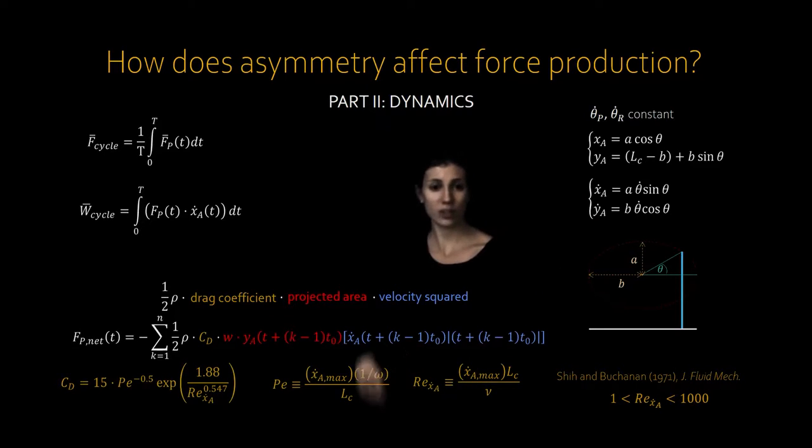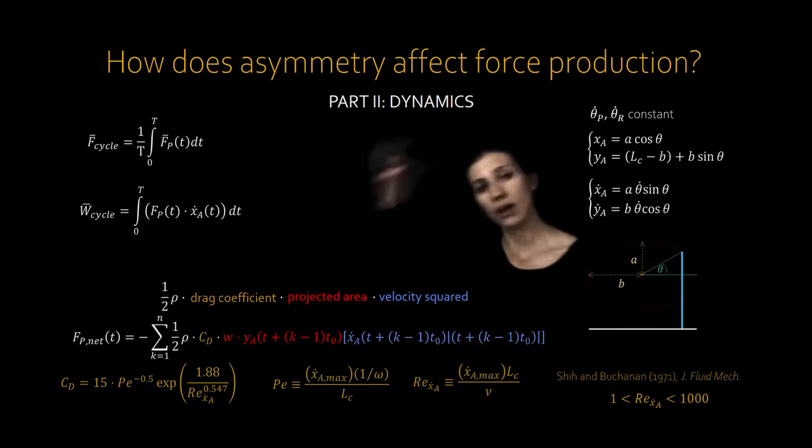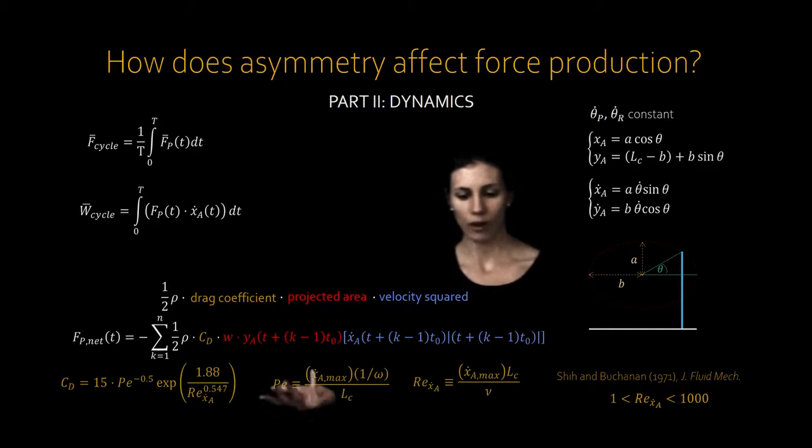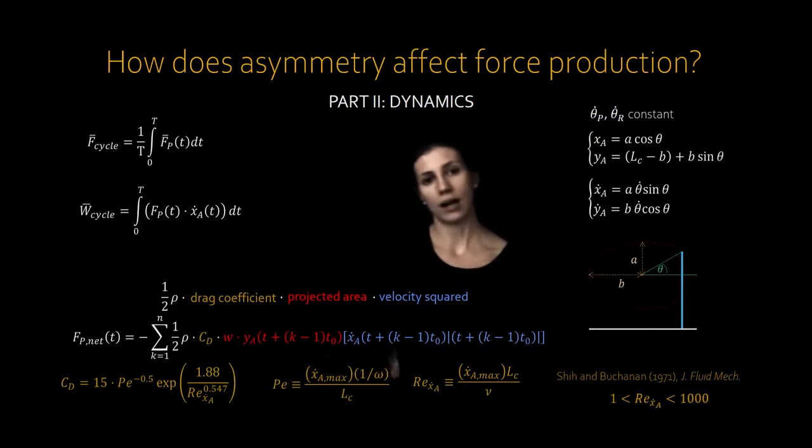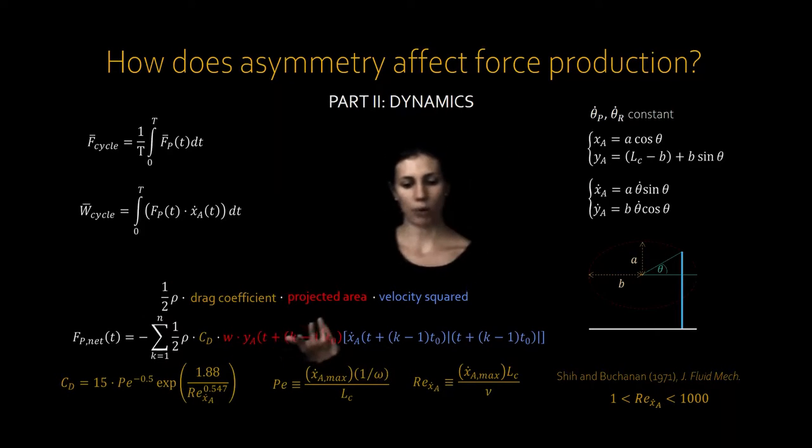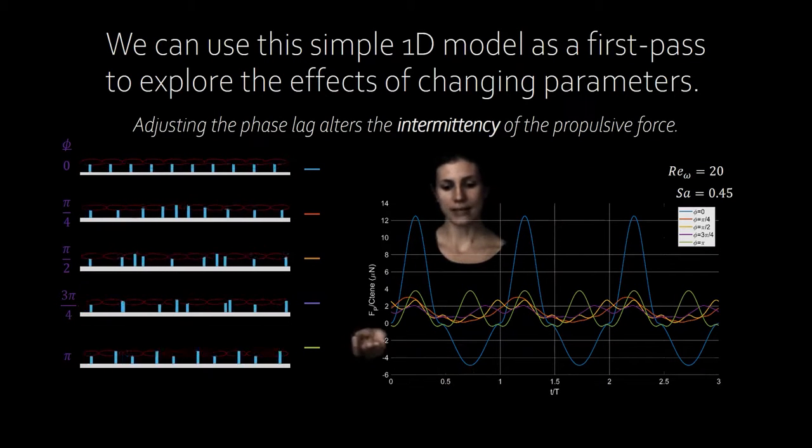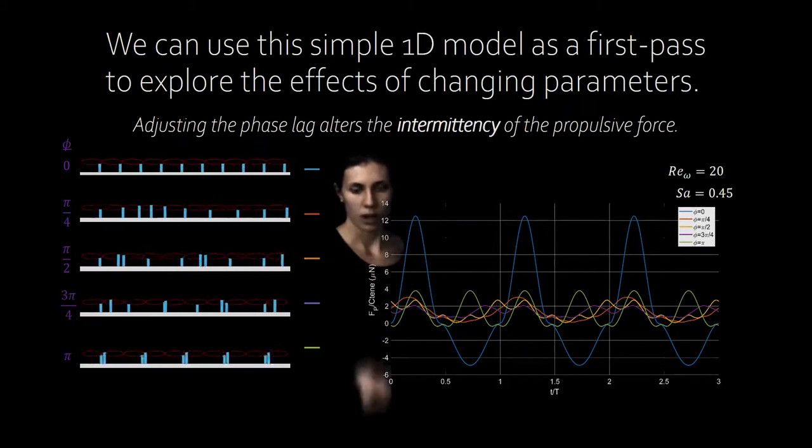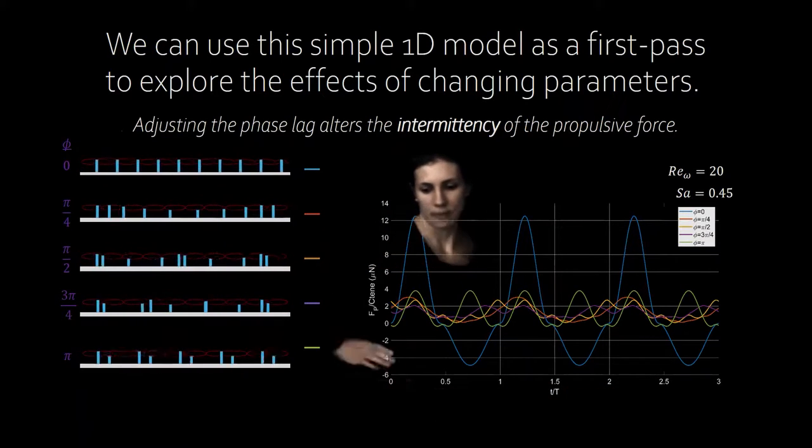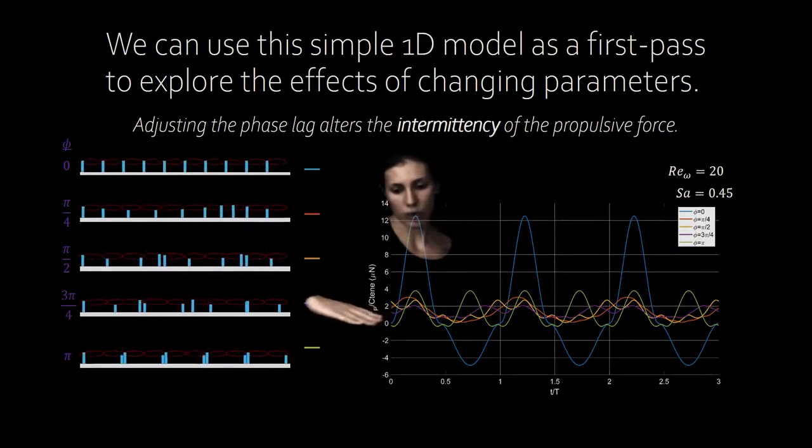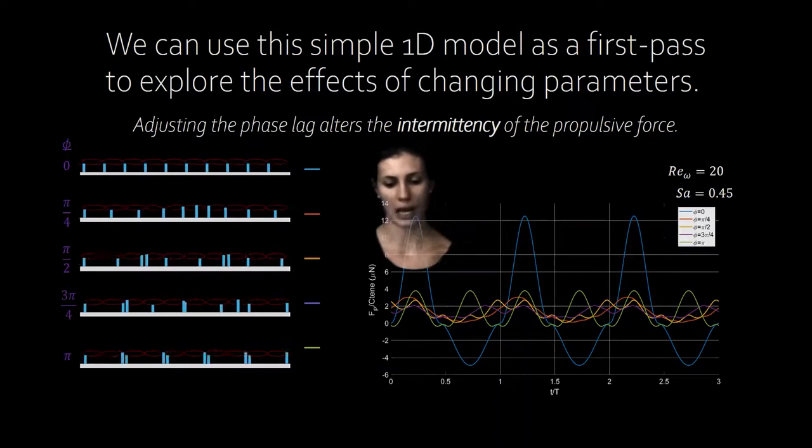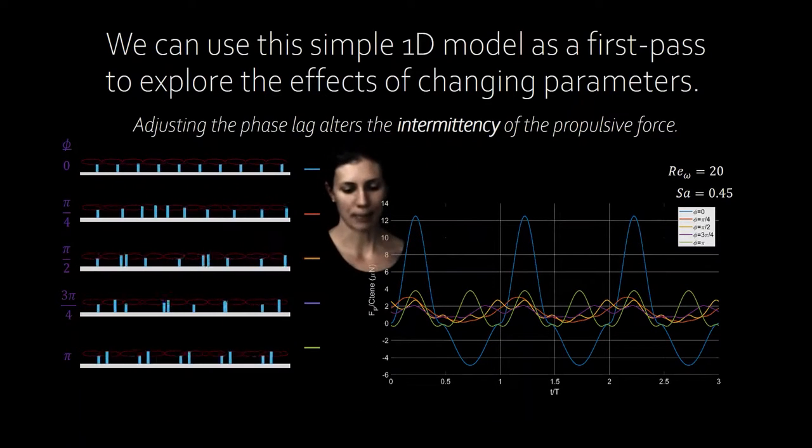So this is a really simplified model obviously. It doesn't take into account any interactions between the ctenes. The only thing it really does is put a phase lag in between them. So it's definitely not going to be able to predict the actual value of the force developed by a real ctene row, but it might be a handy way to look at some very big broad patterns. For example we can see that changing the phase lag between the ctenes can really change the intermittency or the steadiness of the developed force. Here we can see the force per ctene on average over three beat cycles.